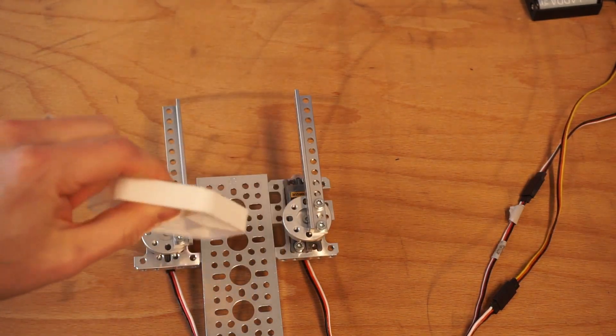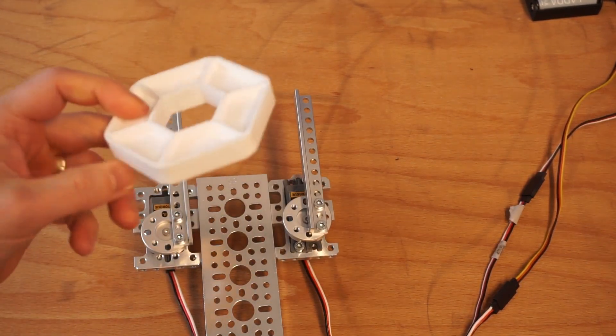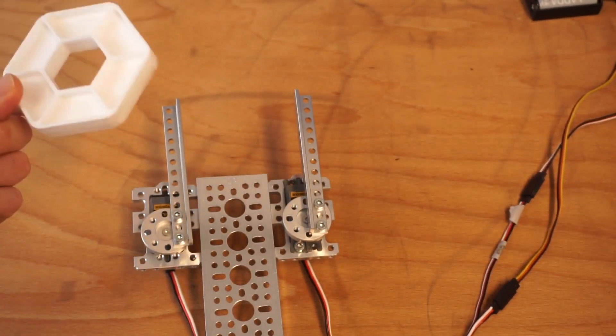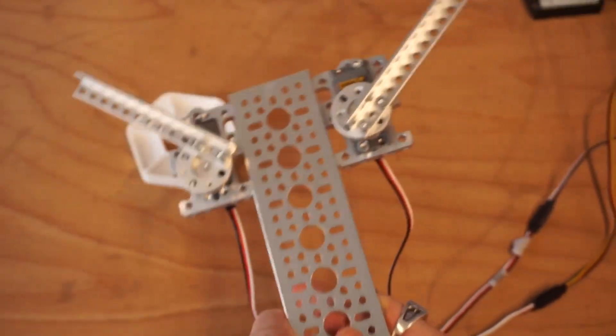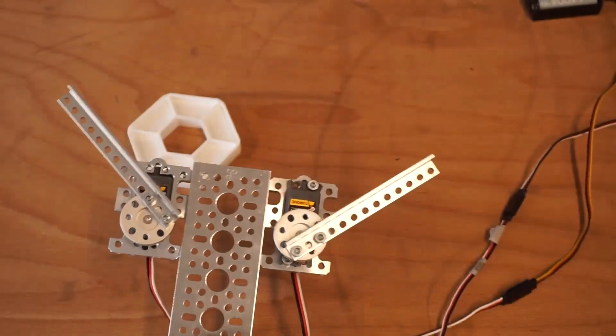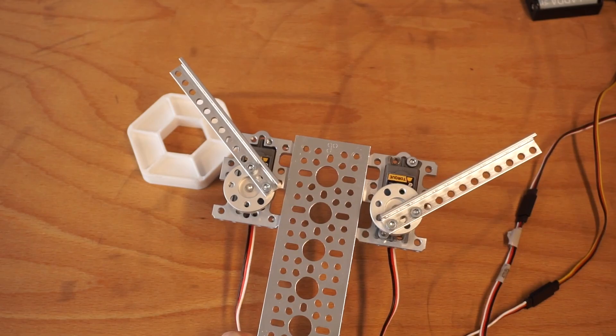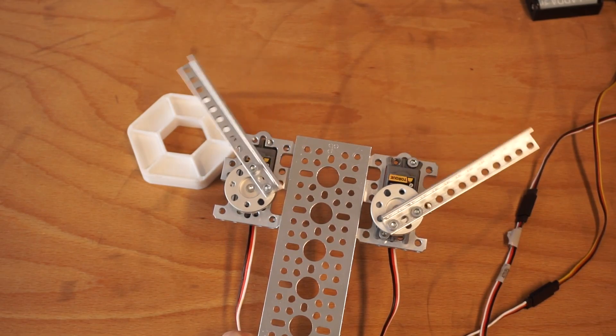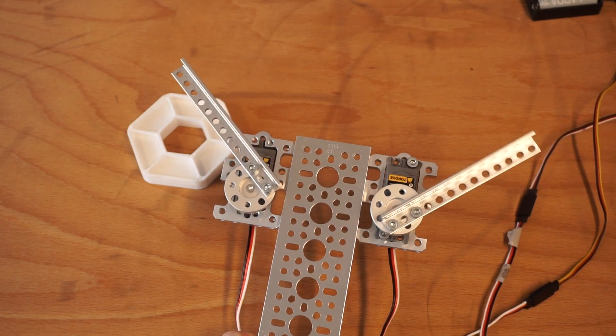Now this works for any object. I'm using the 2023 FTC pixel object as a method. So effectively what I can do is move both servos in a direction to be able to open up and grab to grip any sort of object.